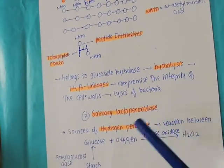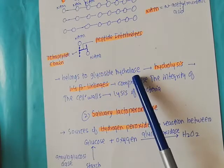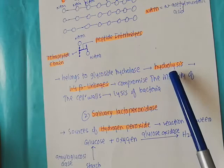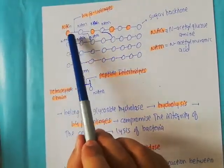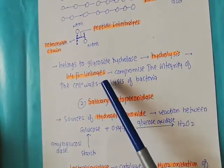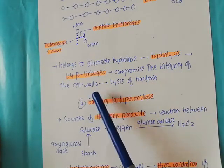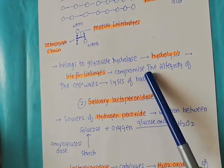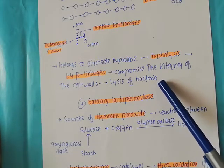Lysozyme belongs to the family of glycoside hydrolases. It hydrolyzes the beta-1,4 linkages present between NAG and NAM. When these beta-1,4 linkages are hydrolyzed, it compromises the integrity of the bacterial cell wall. If the integrity of the bacterial cell wall is compromised, it leads to lysis of the bacteria.